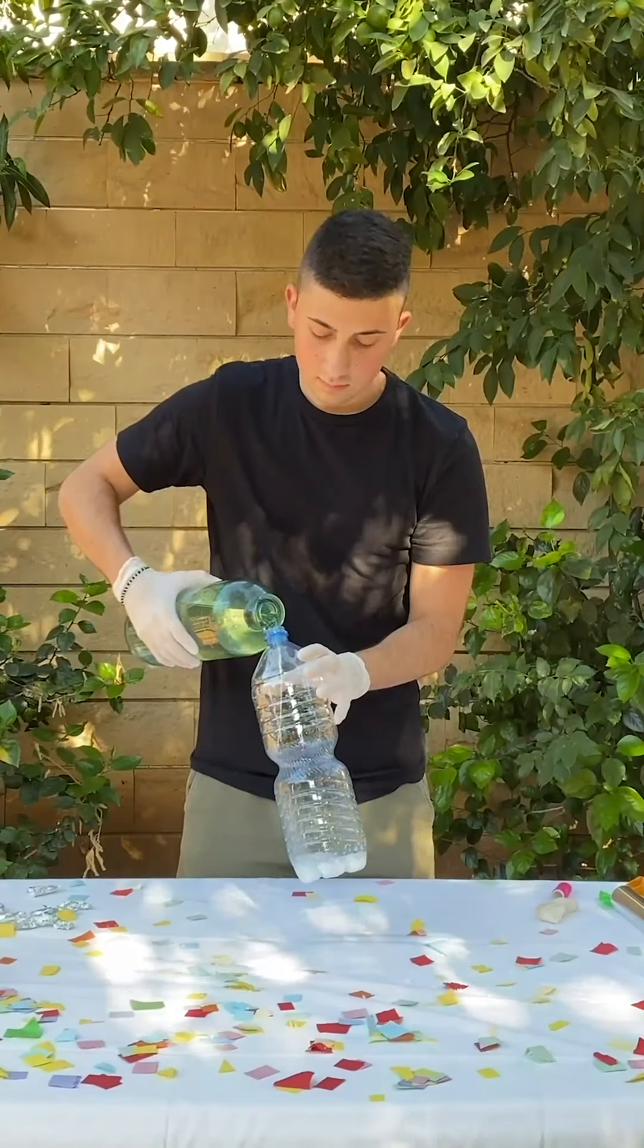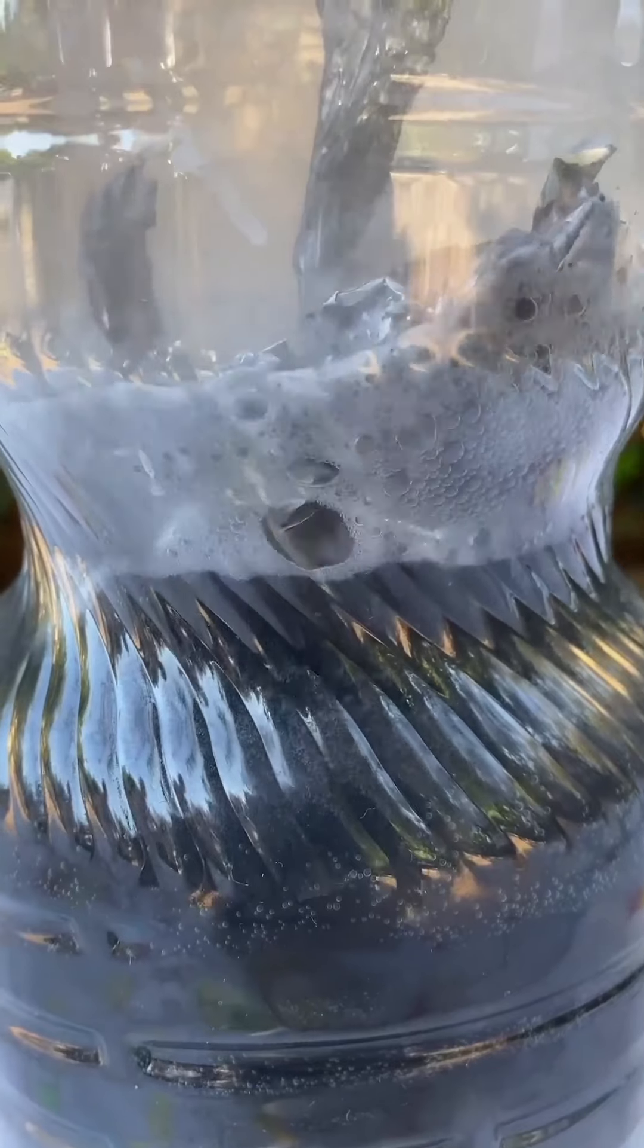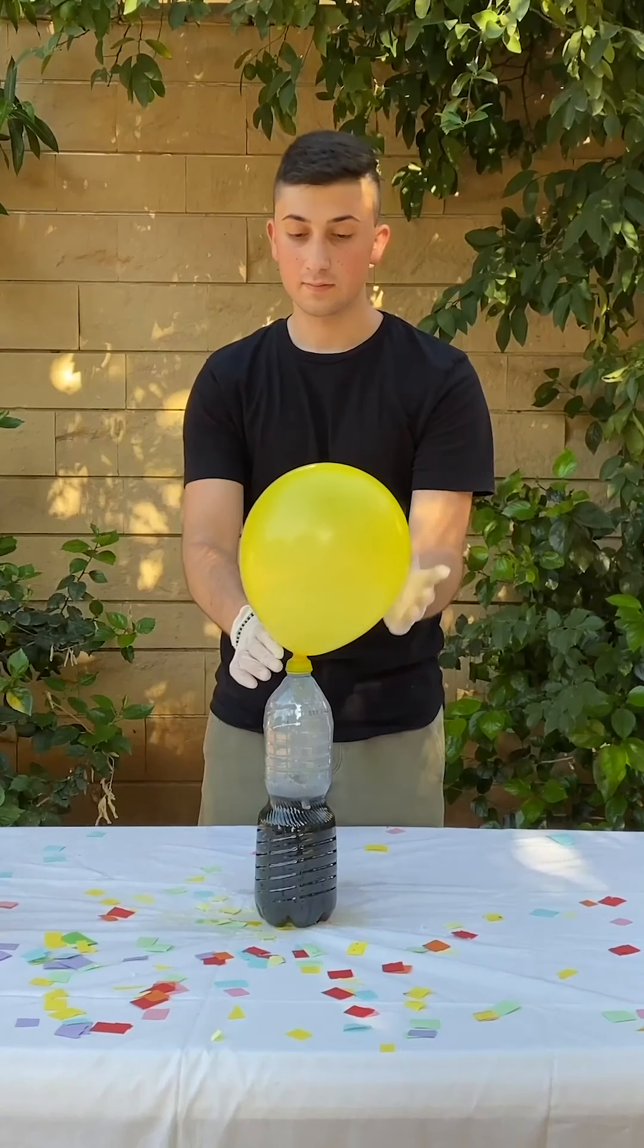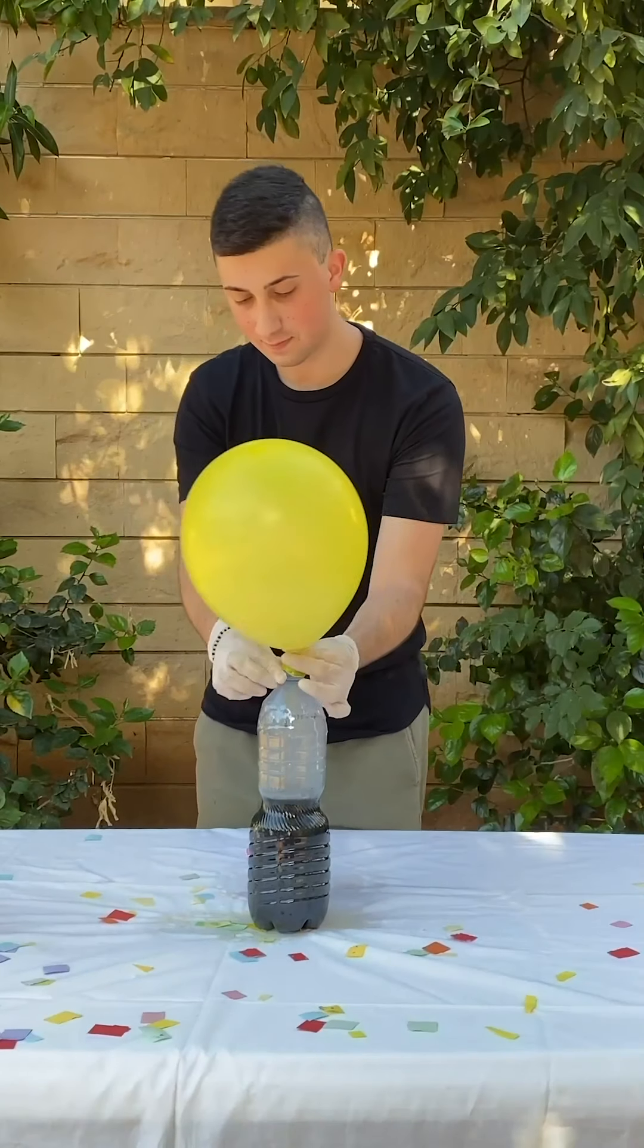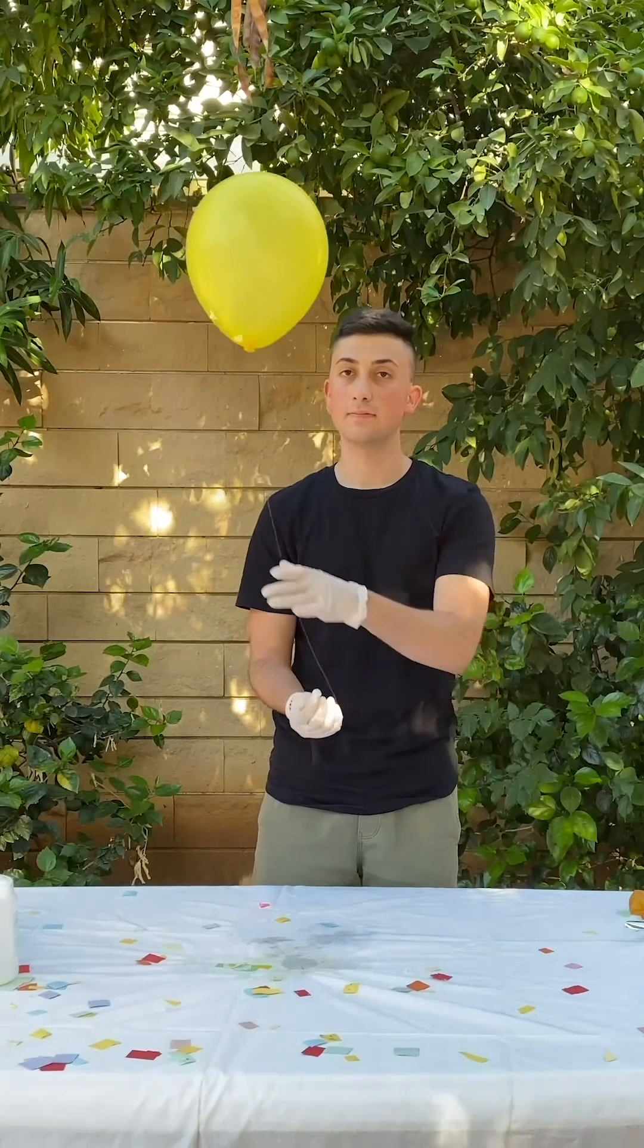This is how you can make hydrogen balloons at home. To do it we use sodium hydroxide which is a drain cleaner and aluminum foil. The reaction of them releases hydrogen gas. Hydrogen is the first element of the periodic table. It's lighter than air and even lighter than helium.